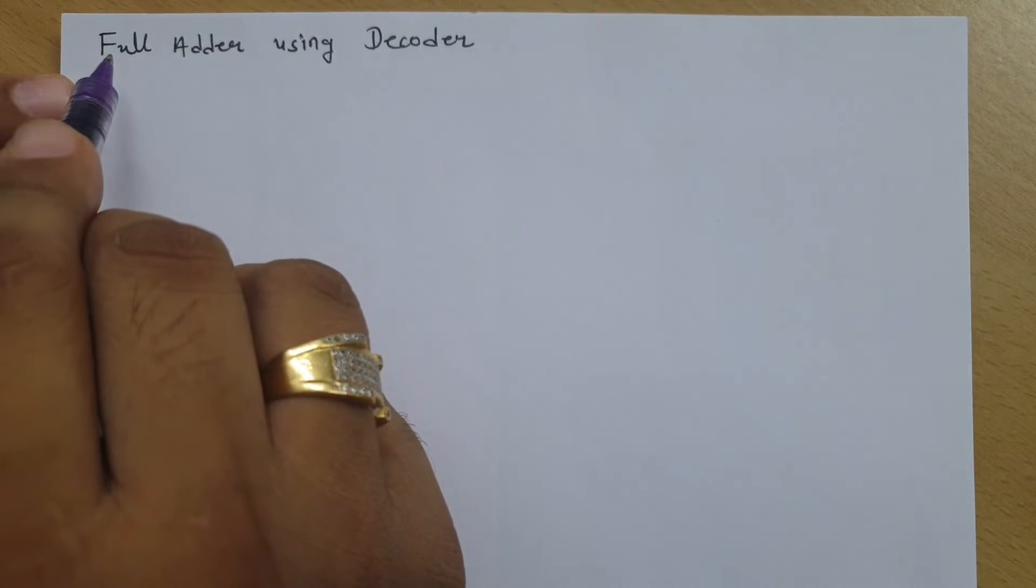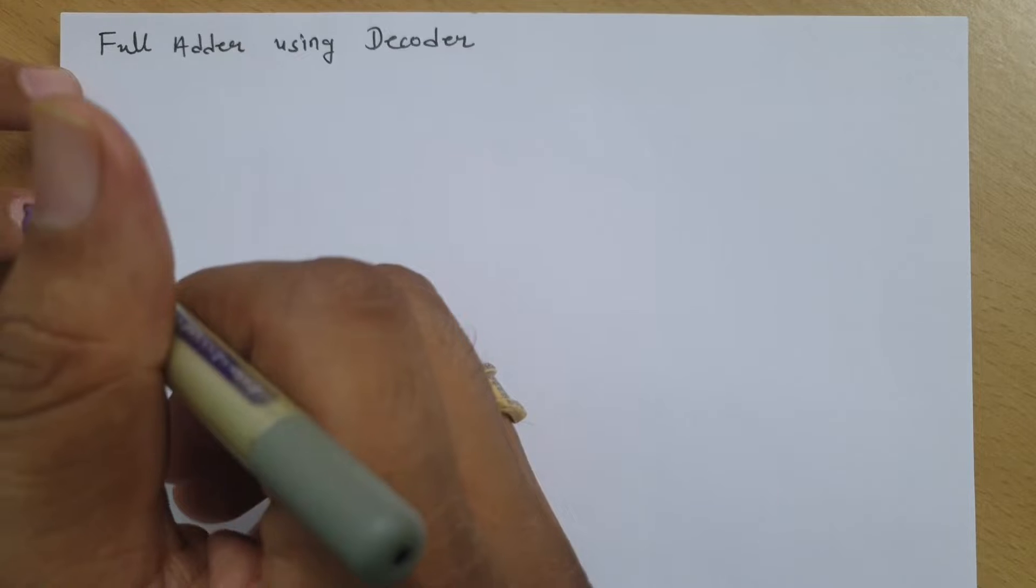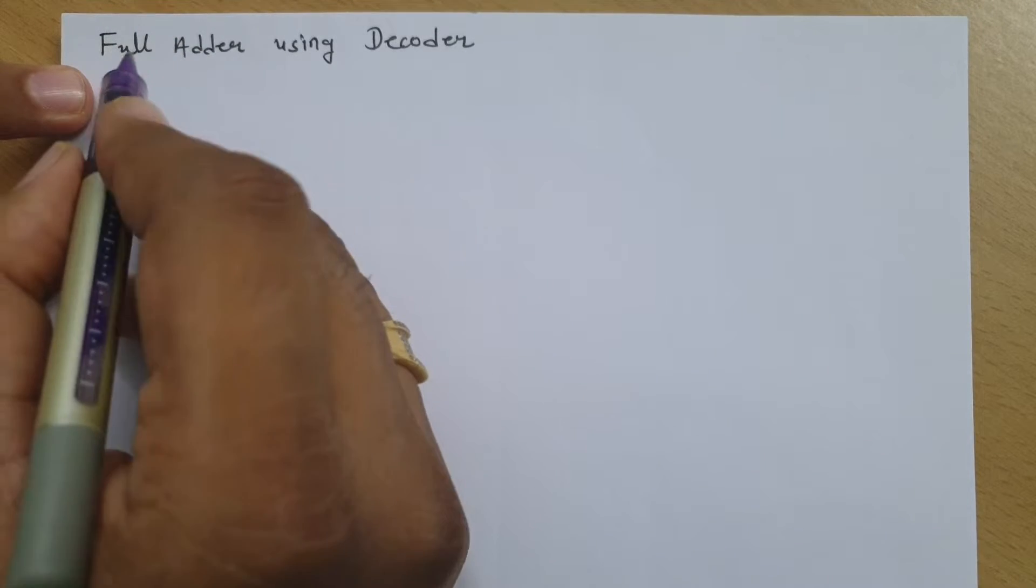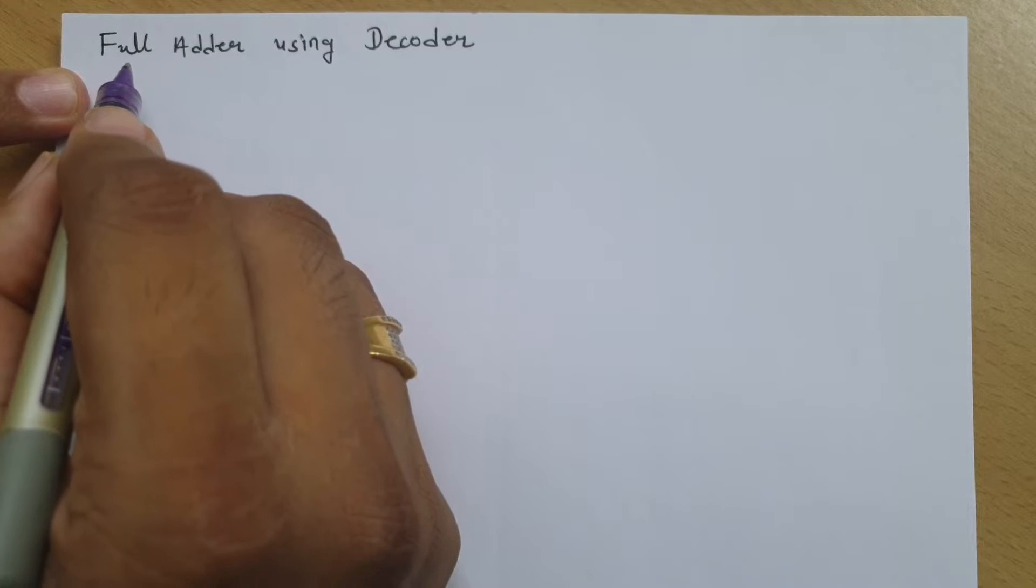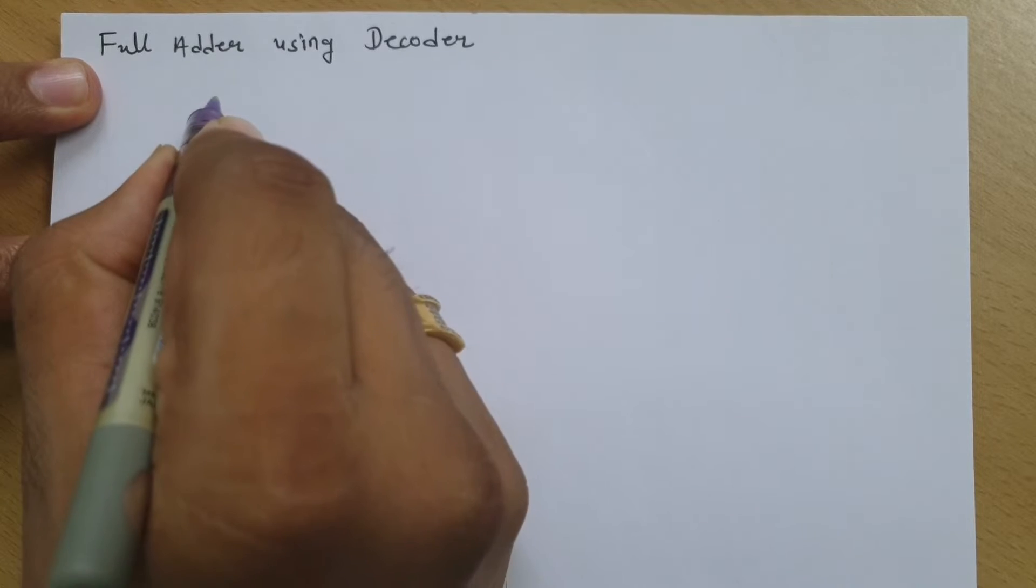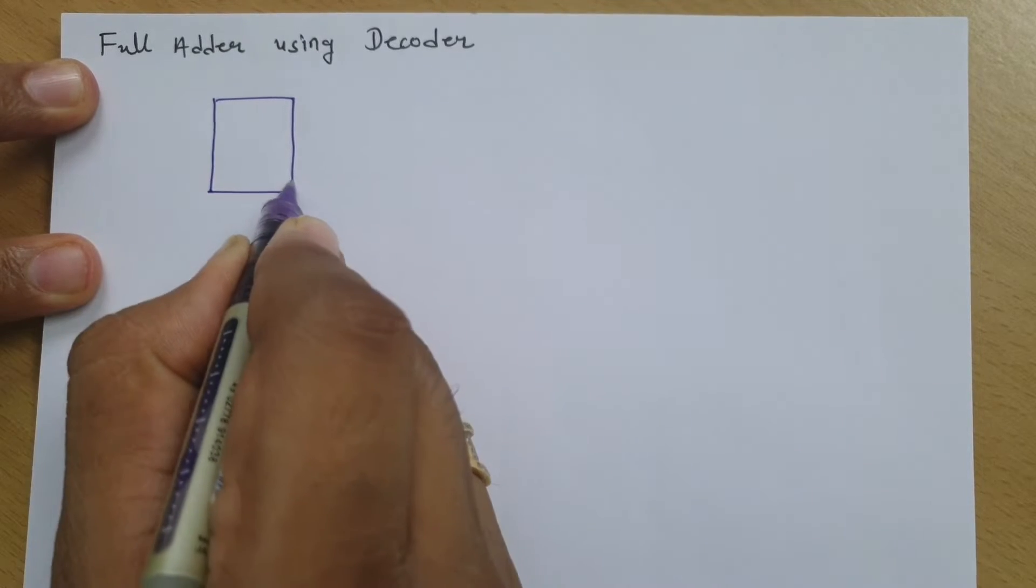Now here I'll implement full adder using decoder. In full adder, we have three inputs. Let's say our inputs are x, y, and z.